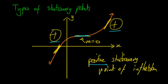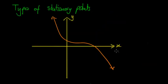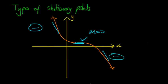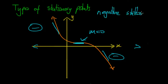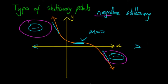The other type is when the graph has a similar shape where m equals zero, but on either side you have a negative gradient. Once again it can't be a maximum or a minimum, because when x is very low the point is higher, and when x is very high it's lower. So this is called a negative stationary point of inflection. Because it's negative on both sides, the graph goes down, reaches the flat point, and continues down in that characteristic shape.